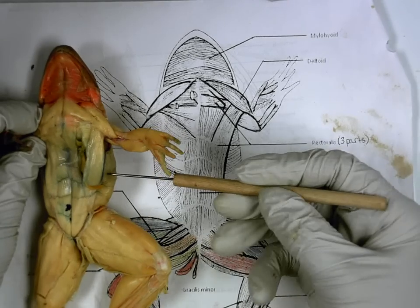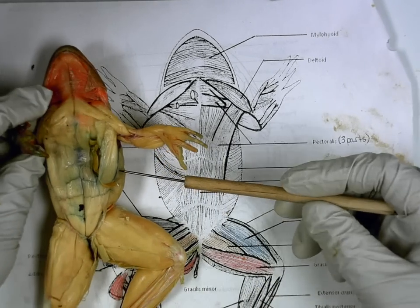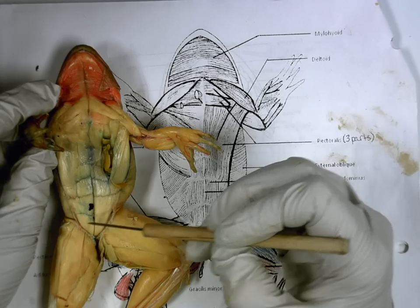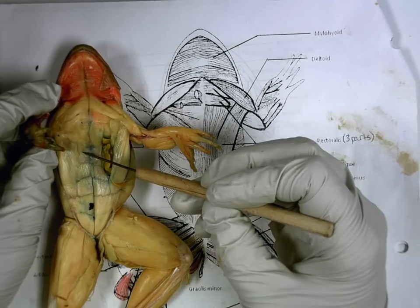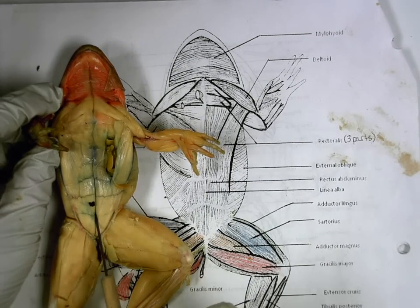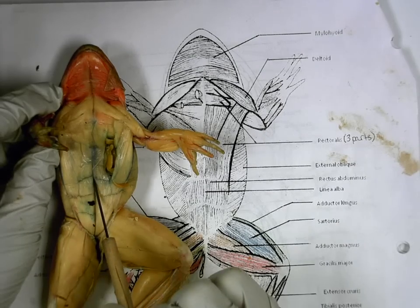Then we have the sides. The sides are always external obliques. Then we have the six-pack, rectus abdominis. Then we have what's running down the middle. This line is called linea alba.